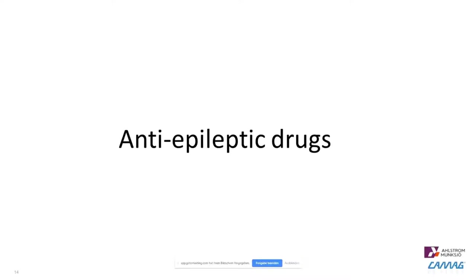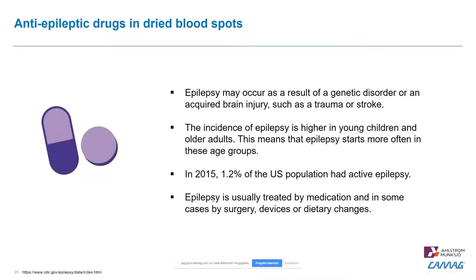The third example I would like to explain is for anti-epileptic drugs. Epilepsy — I think you're all aware of this — I was a little bit astonished when I read the statistics and numbers about how many people develop epilepsy during their lifetime. In the US it's 1.2 percent according to national statistics.